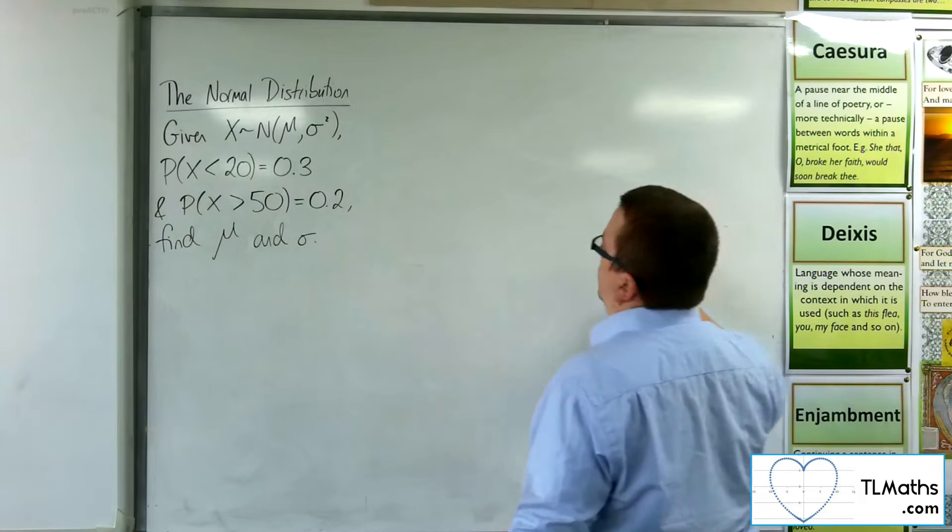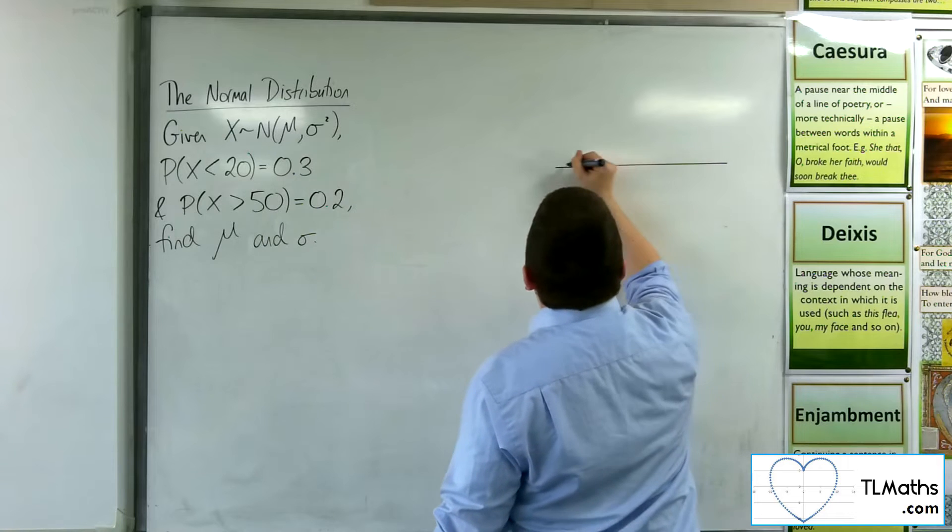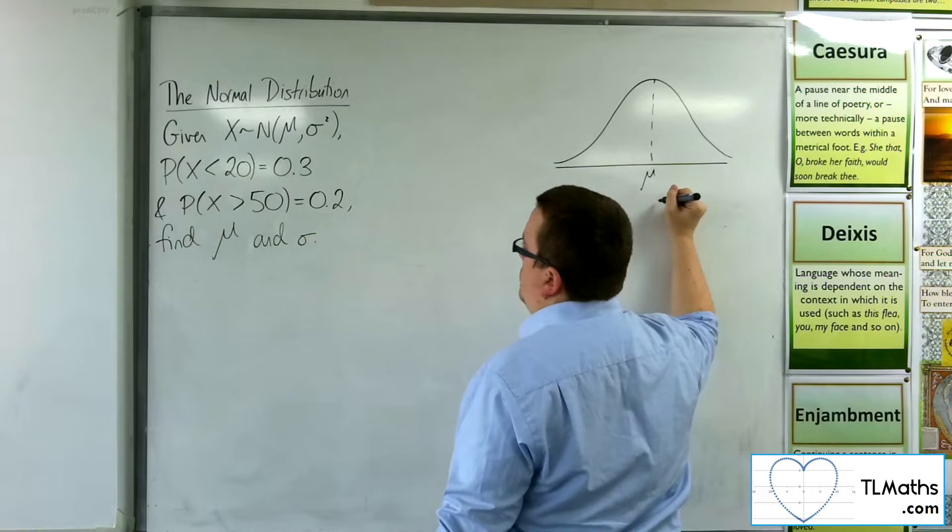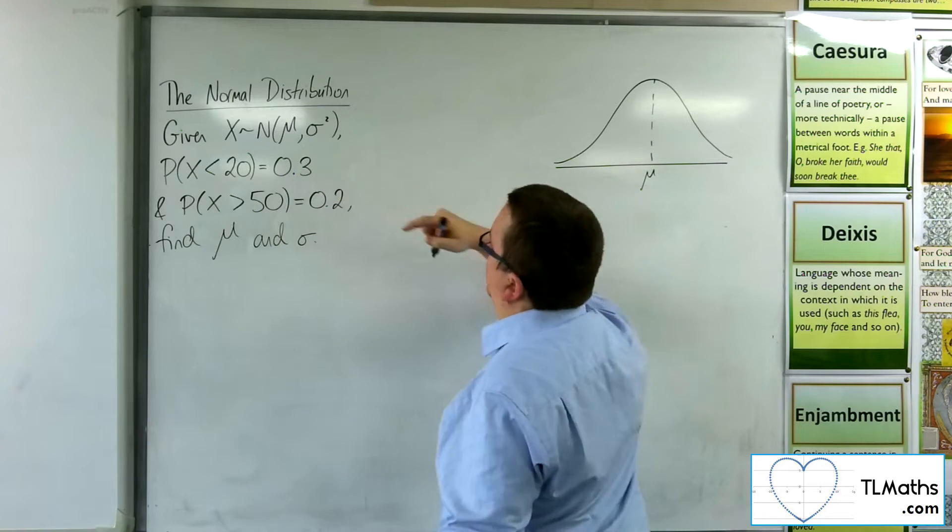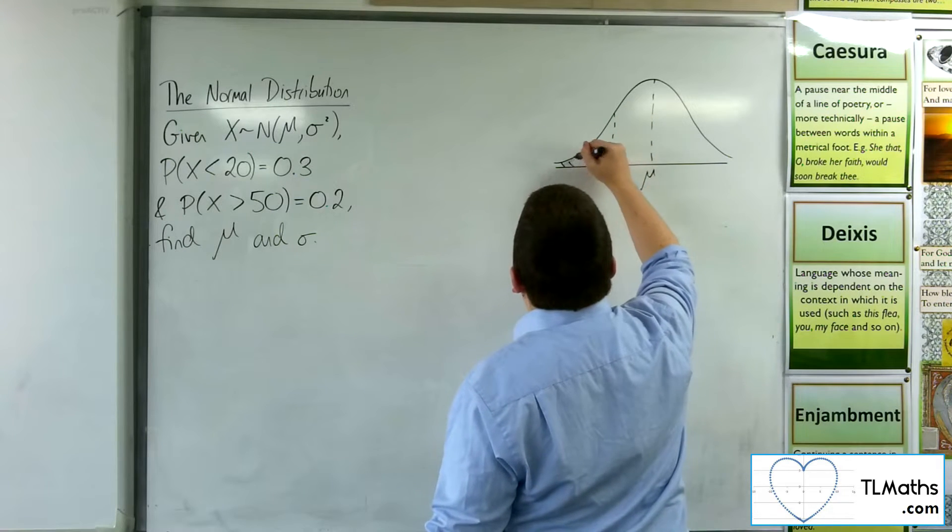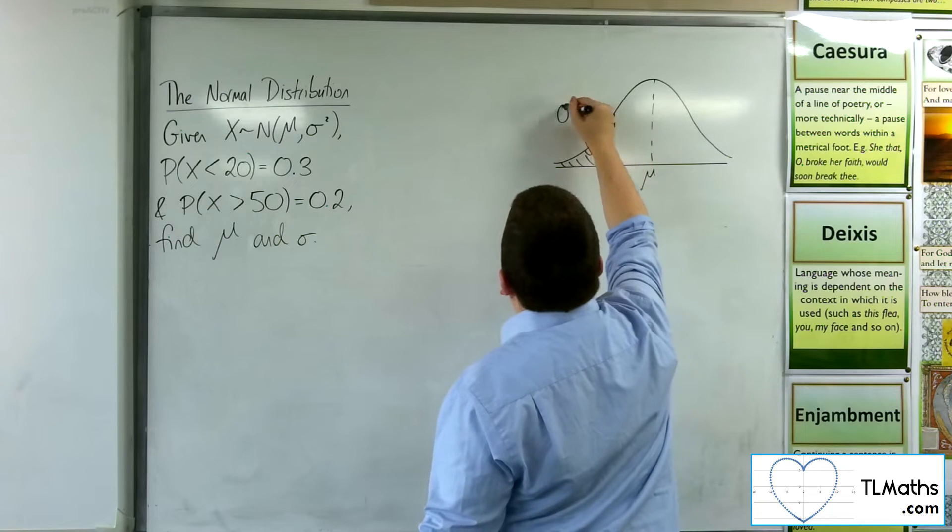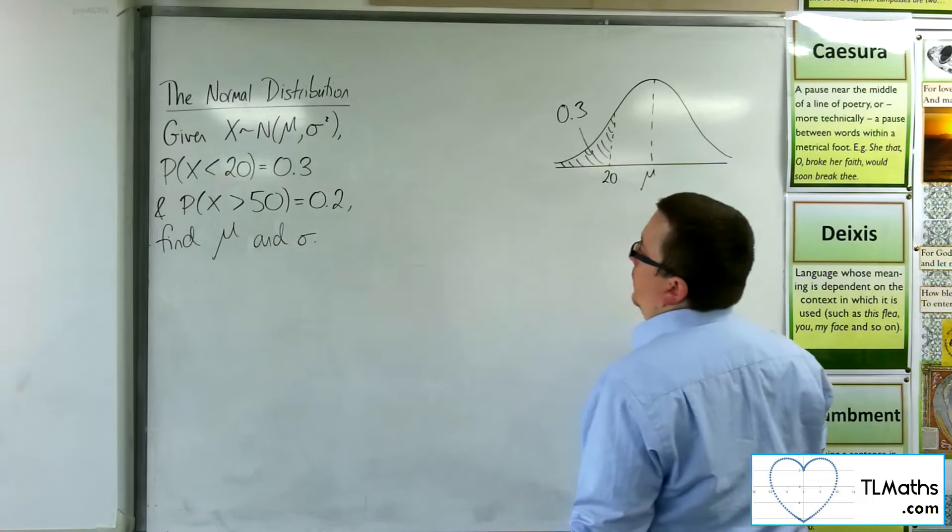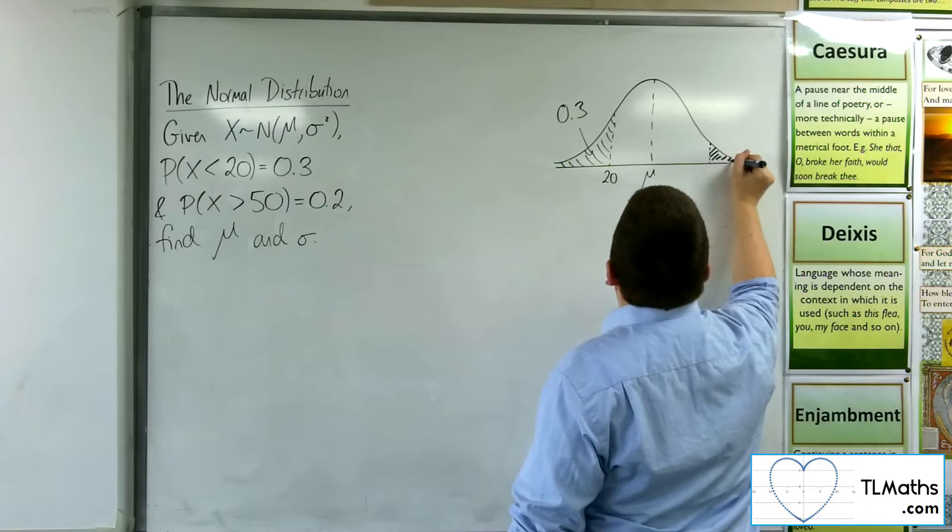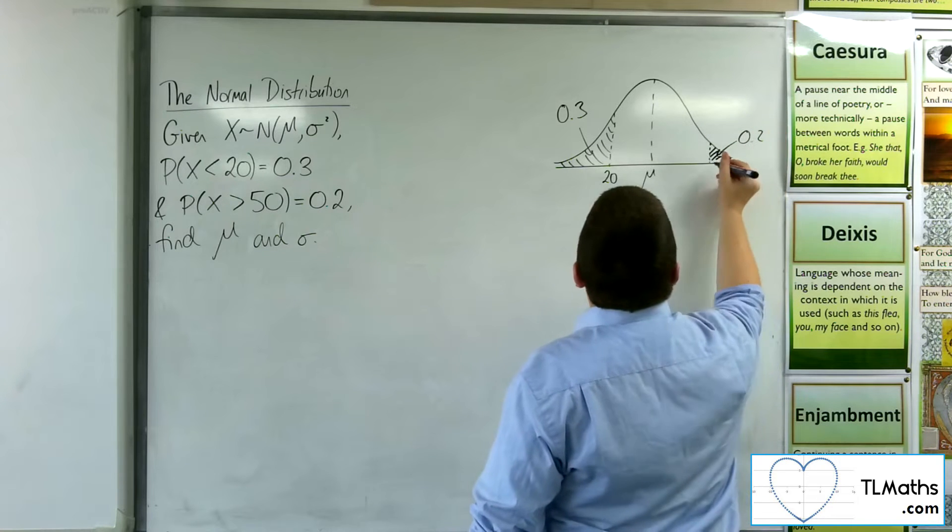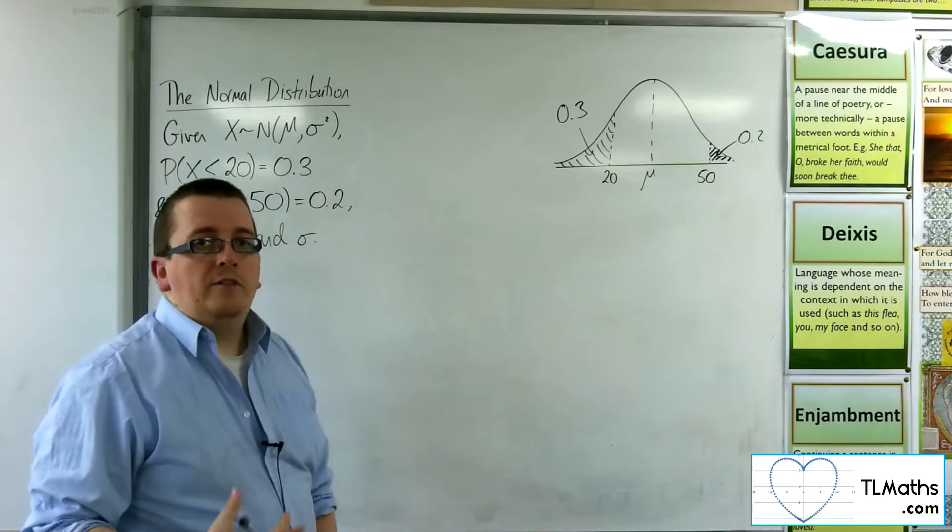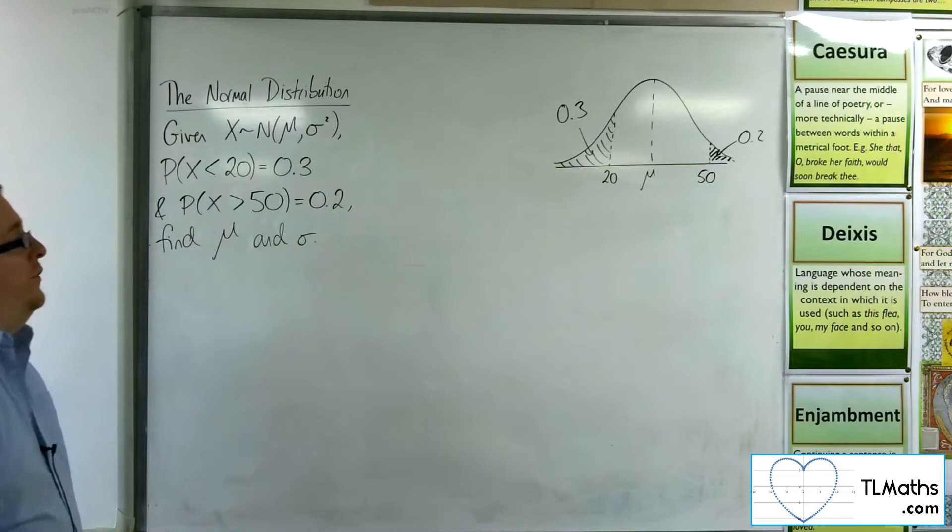So what we want to do is we want to draw a diagram to represent this. So let's draw a normal distribution. So there's our μ, we don't know that, but we know that 30% is less than 20. So there is this figure 20 where this is 30%. And we also know that 20% are larger than 50. So there is my 20%, which is larger than 50. So from those two bits of information, hopefully, I can figure out the μ and σ.